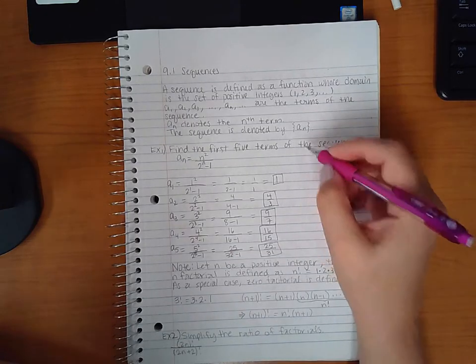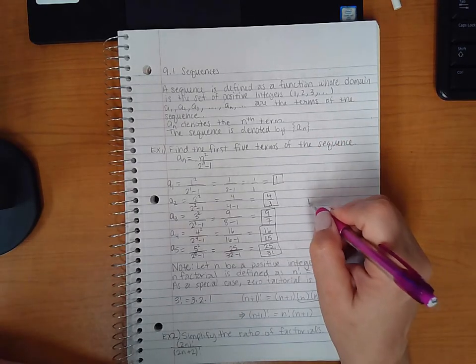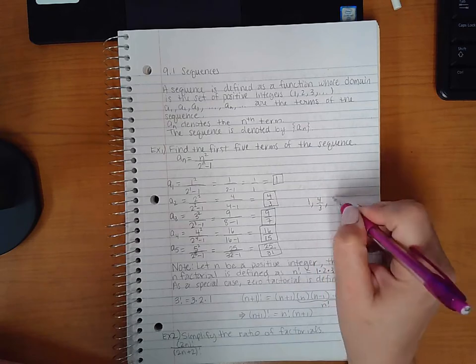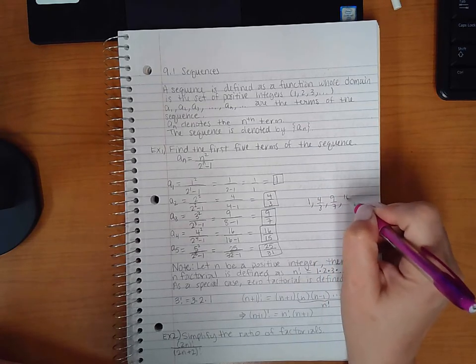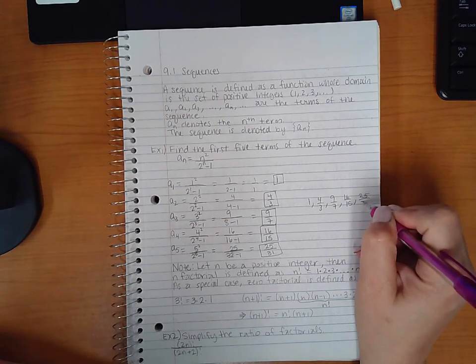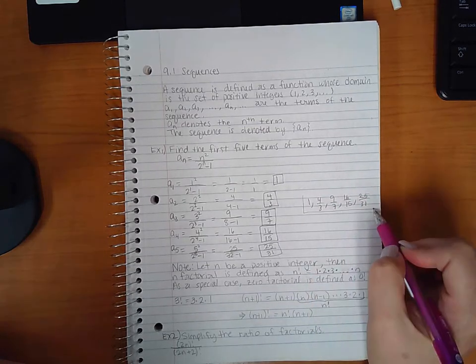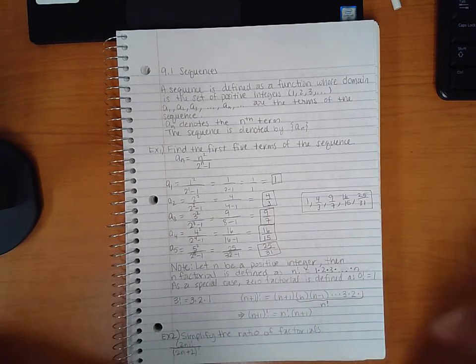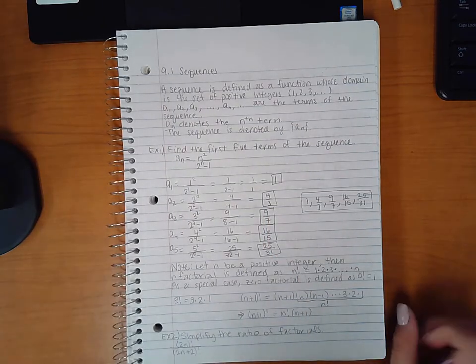And so the first five terms of the sequence would be 1, 4 thirds, 9 sevenths, 16 fifteenths, and then 25 thirty-firsts.